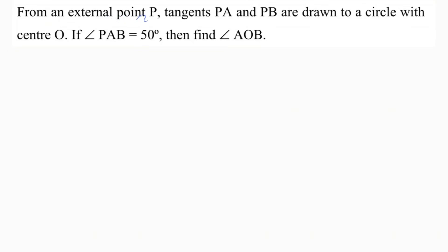From an external point P, tangents PA and PB are drawn to a circle with center O. If angle PAB is 50 degrees, then find angle AOB.